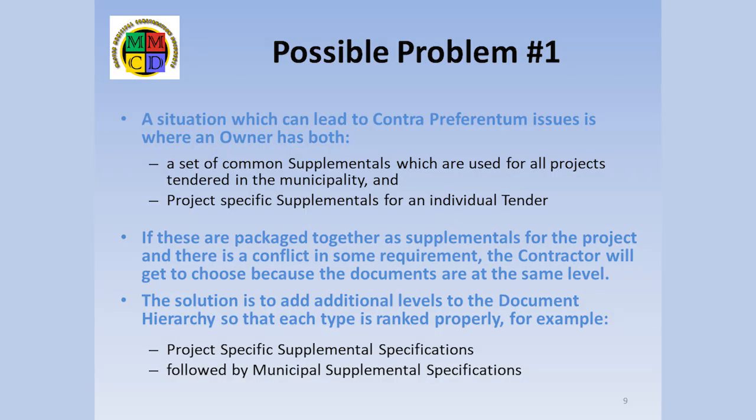I'd like to discuss two situations I've seen which lead to document hierarchy problems. Frequently, an owner will have a set of common supplementaries which it uses on all projects that it builds. In addition, there will be project-specific supplementaries. Often, these are combined as one group of supplementaries when tendering. If there is a conflict between documents in these supplementaries, then there's no way for the document hierarchy to help, as both are at the same level. Common sense would indicate that anything project-specific should override items used for all projects, but that's not what the documents say.